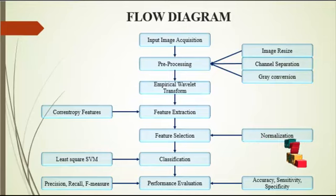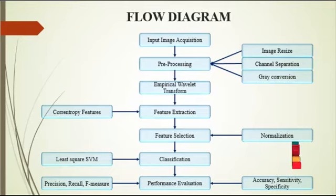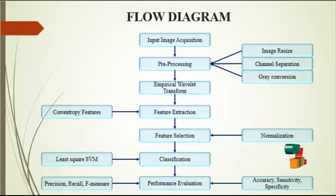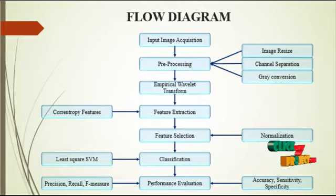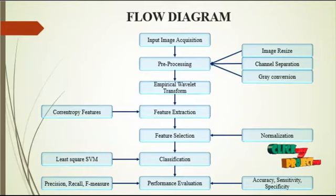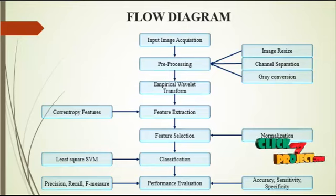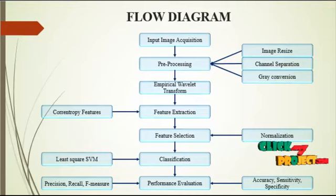For image resize, all images in the dataset are converted to a uniform size of 256x256 pixels. After that, channel separation is performed on the original RGB image, which consists of three channels: Red, Green, and Blue. Each channel is separated individually. For grey conversion, the original RGB three-channel image is converted into a single-channel greyscale image.